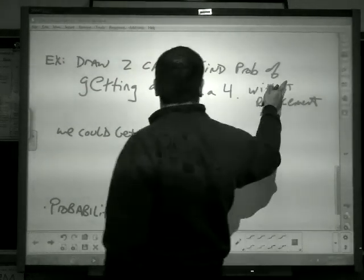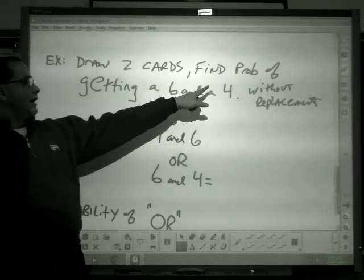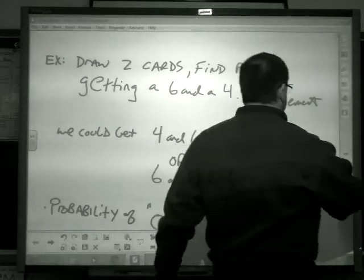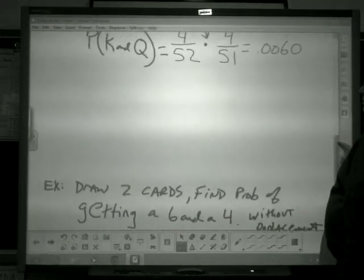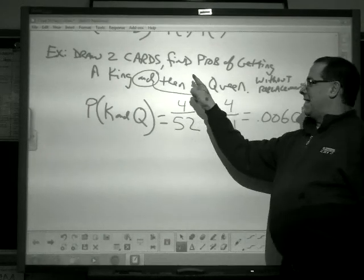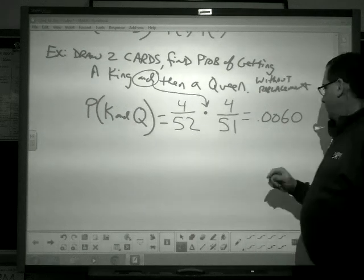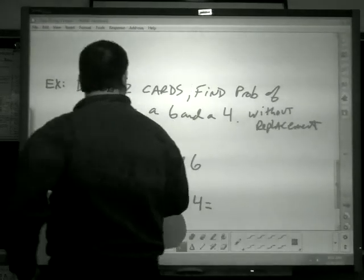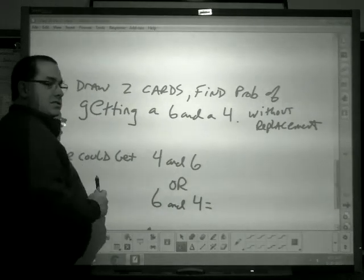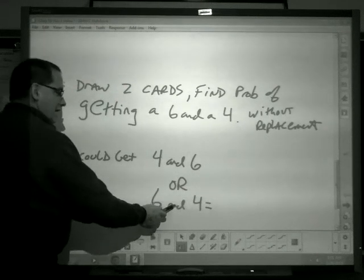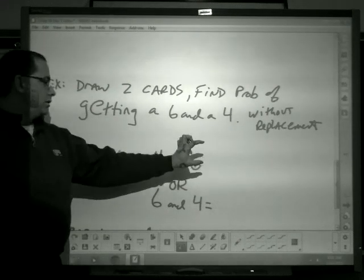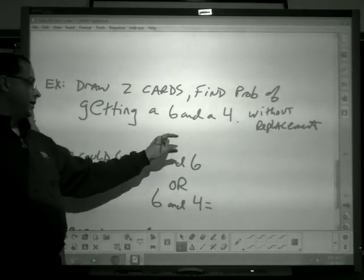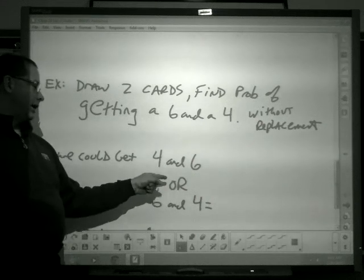Draw two cards from the deck. Find the probability of getting a six and a four without replacement. You might say, well isn't that the same thing as the king and the queen? Notice, this problem said a king and then a queen, so we have a specific order. This was, I want to get a six and a four. I could get the four first and then the six, or I might get the six and then the four. So we have a probability of one thing and then another thing happening, or we've got to address this now.